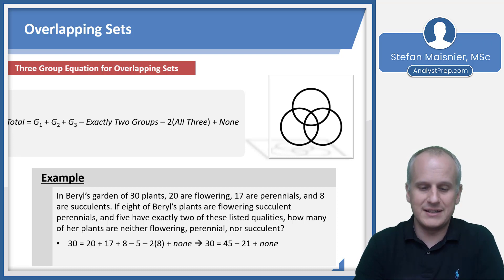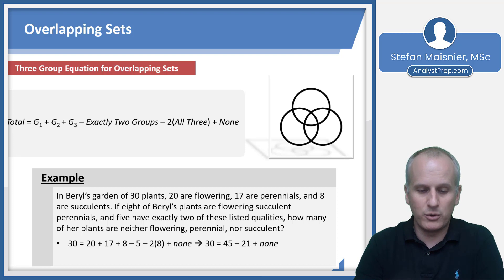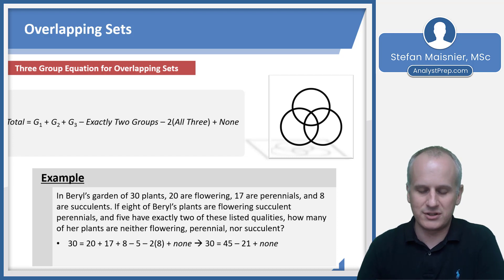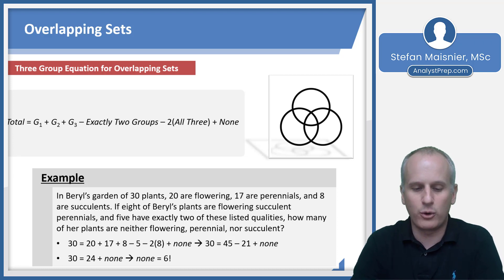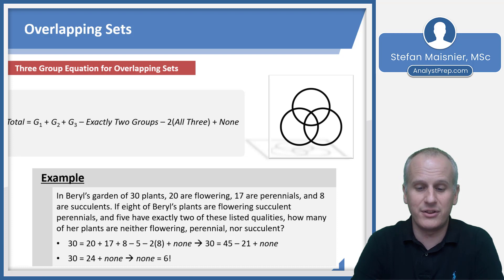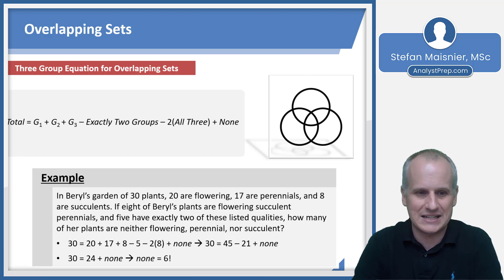We discover that 30 equals 45 — because 20 plus 17 is 37, and 37 plus 8 is 45 — minus 21, because minus 5 minus 16 is minus 21, plus our nones. Combining like terms, 30 equals 24 plus none. Subtracting 24 from each side, those with none of the characteristics are 6 plants.